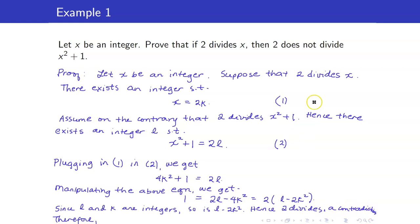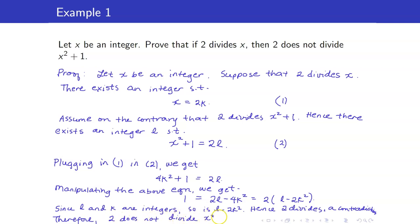Therefore, our assumption that 2 divides x² + 1 is false. So we have that 2 does not divide x² + 1.